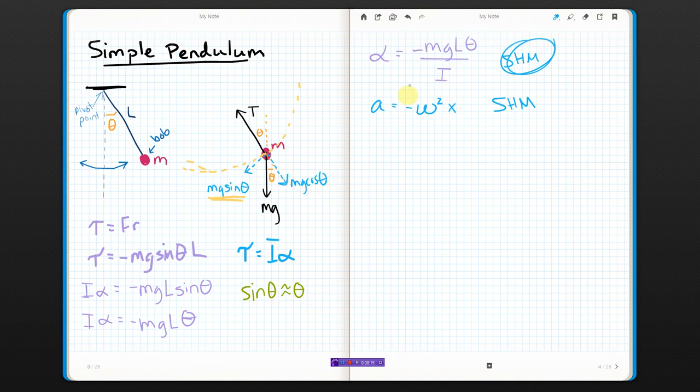It's just angular. And we can yank out an omega for this. So, if these match, and those match, then this stuff in here must be the same as omega squared. MGL over I.